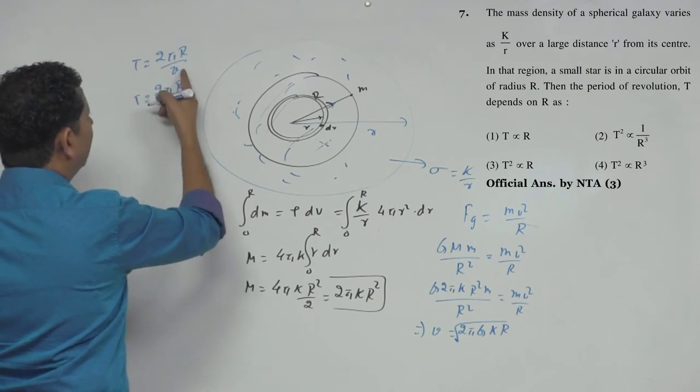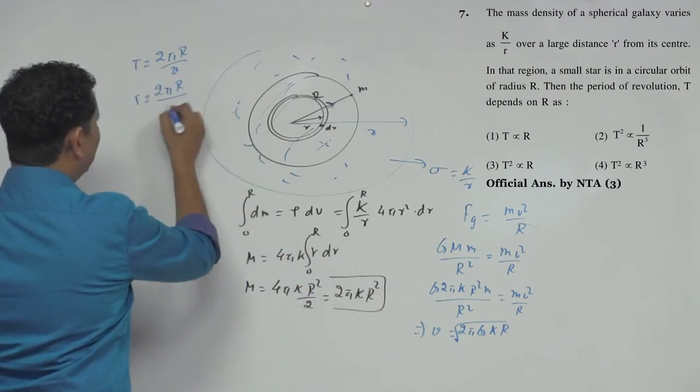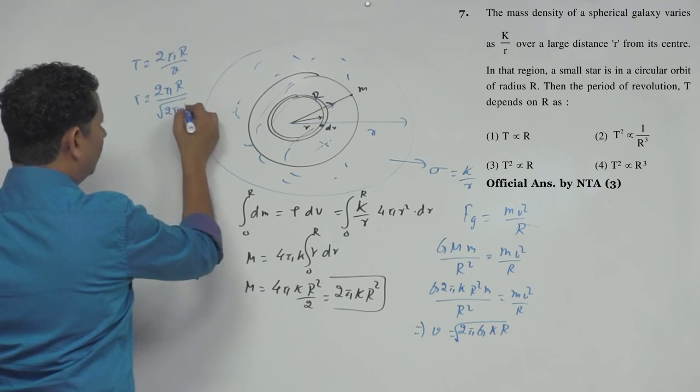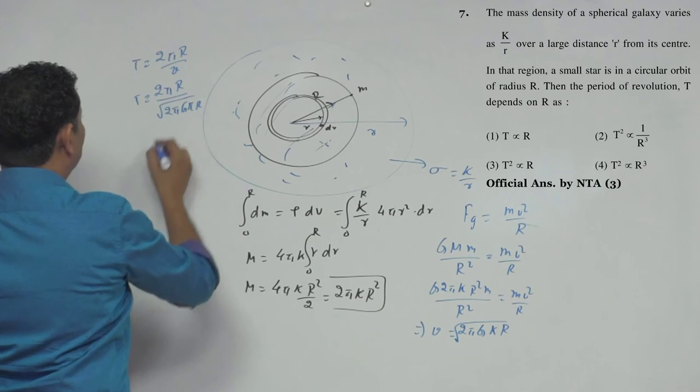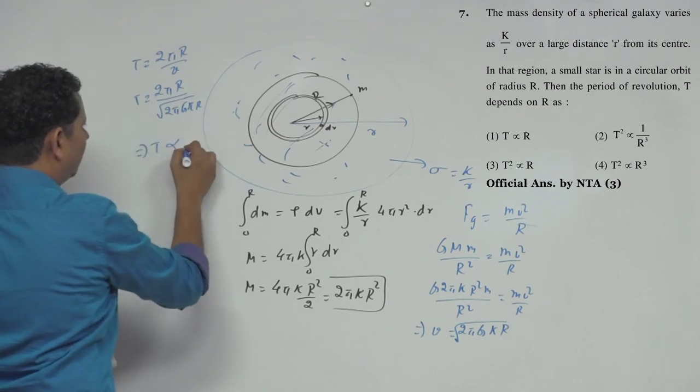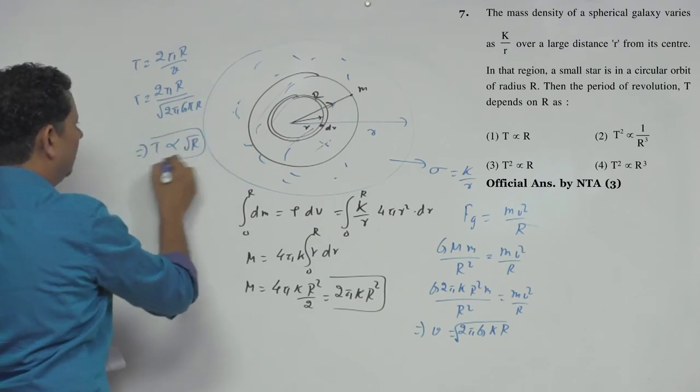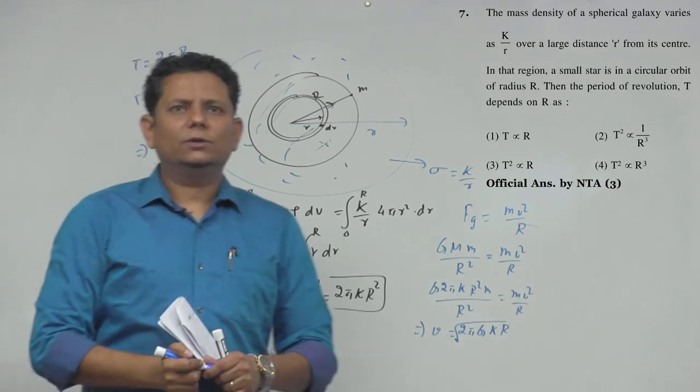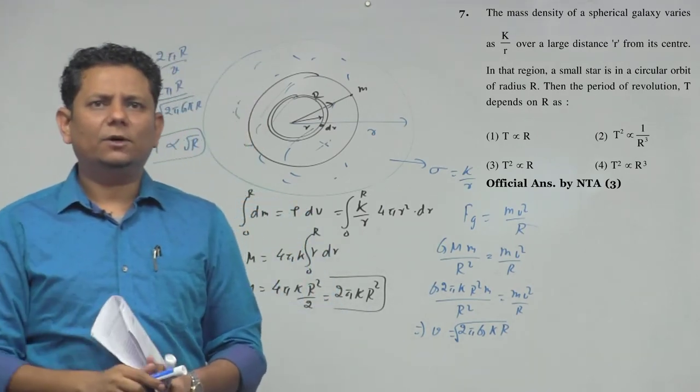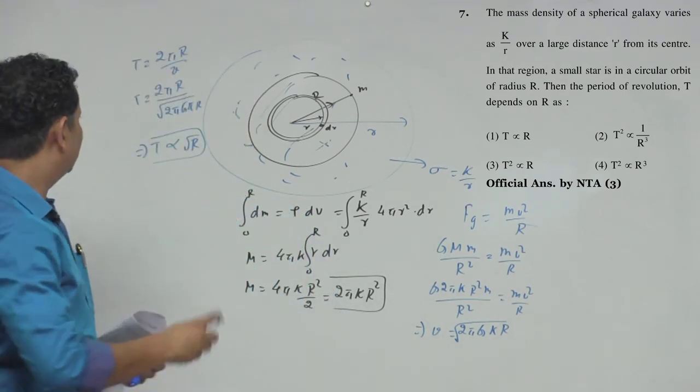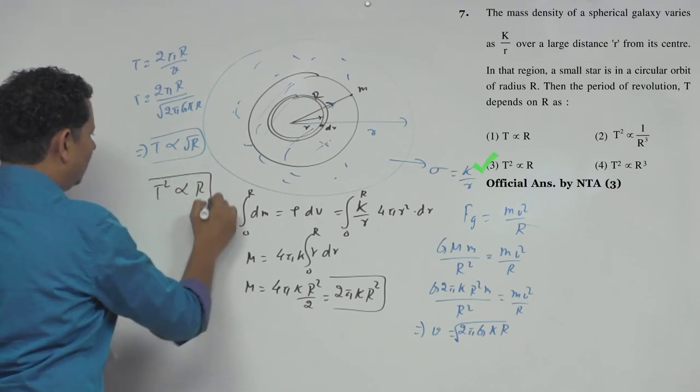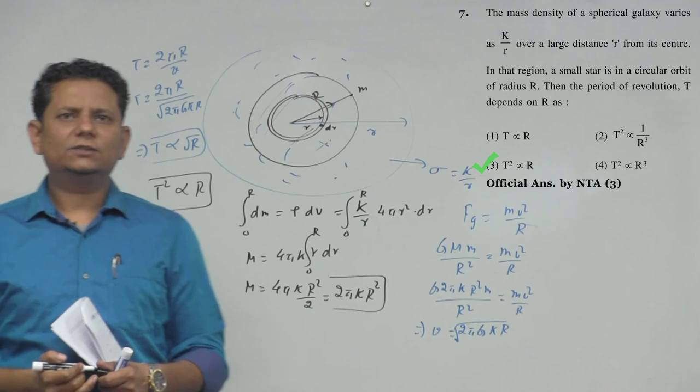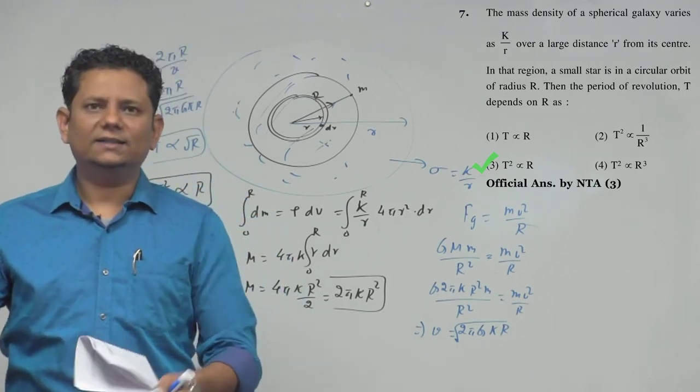Which is 2πr divided by under root 2πGk r. This implies time period is proportional to under root r. Which means T² is proportional to r. So option number 3, T² is proportional to r, would be the right answer for this problem.